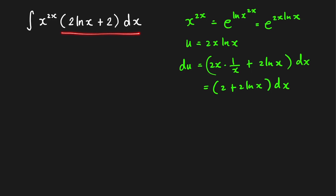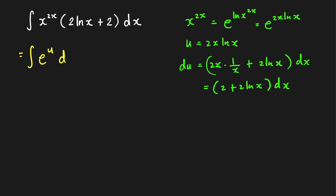Therefore, we can write our integral as the integral of e raised to u, where the remaining factor is just du. So this equals e to the u plus C. But e to the u is our original expression, so the answer is simply x raised to 2x plus C.